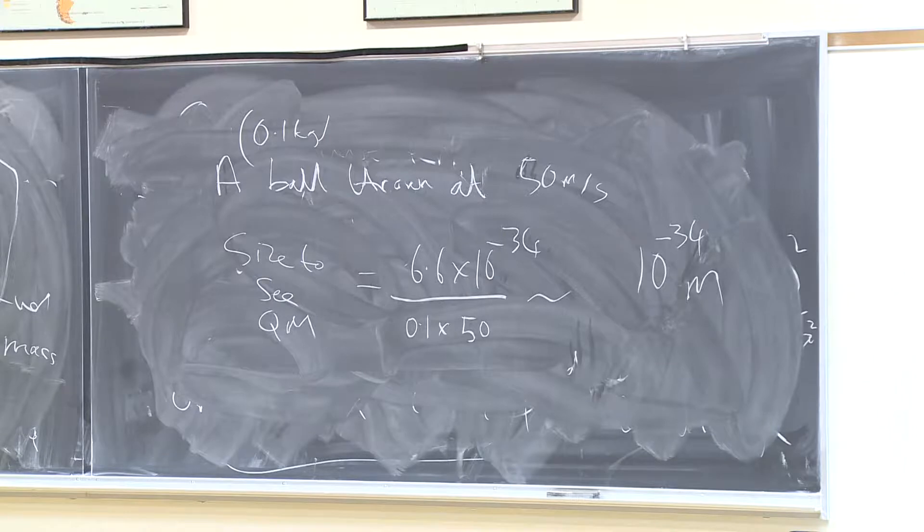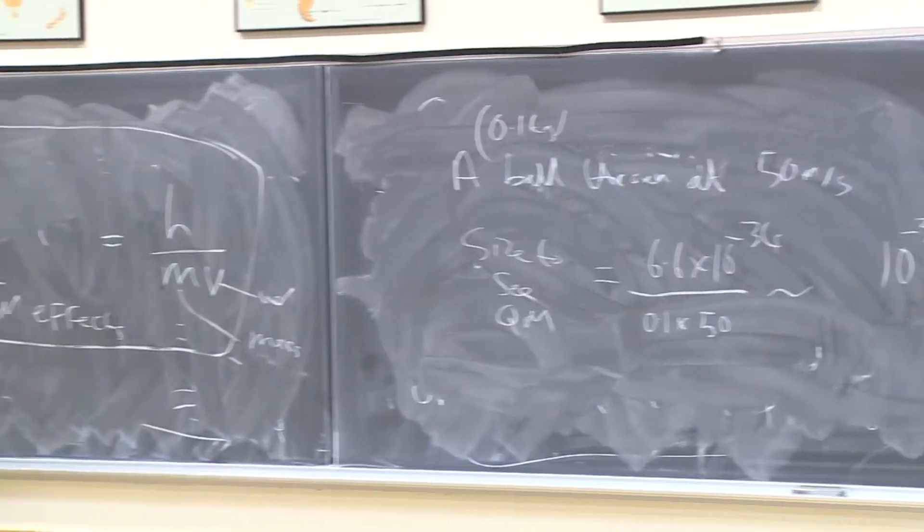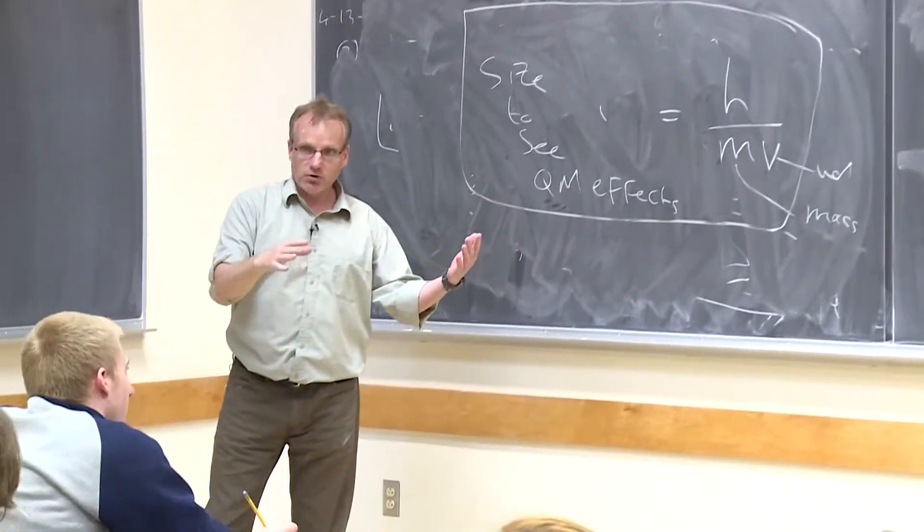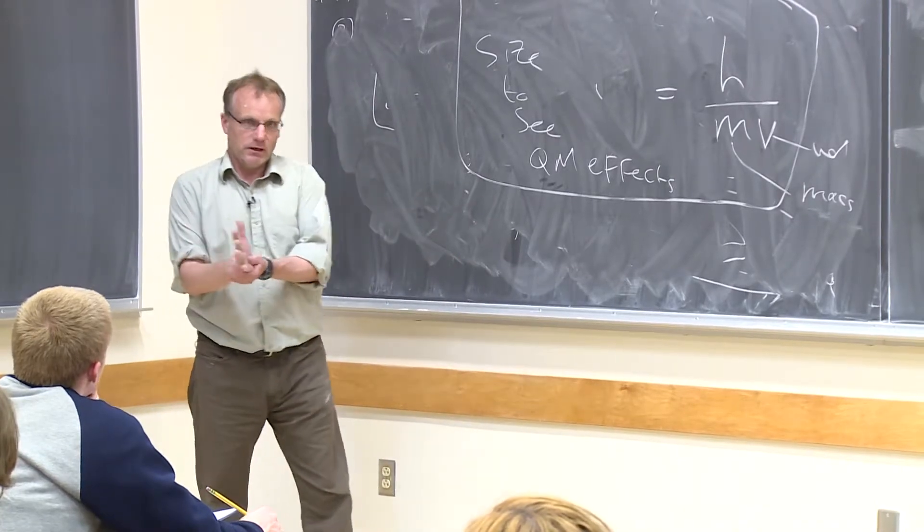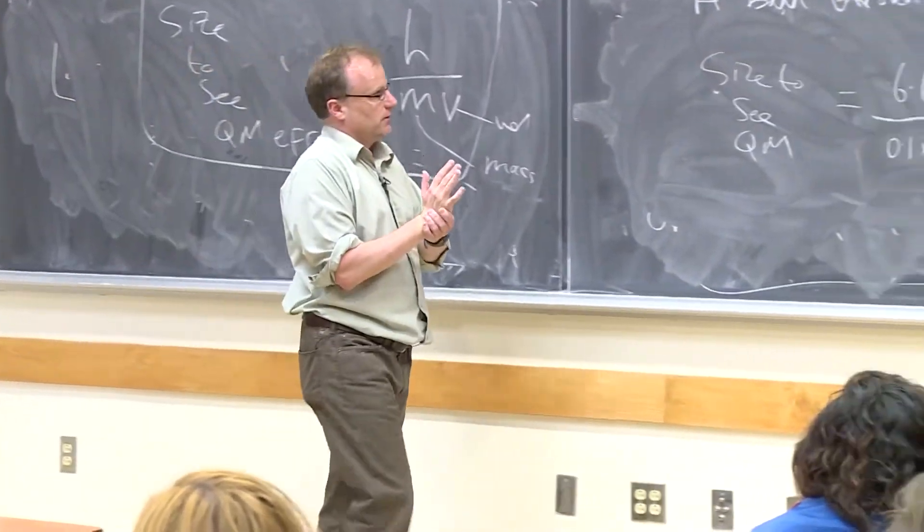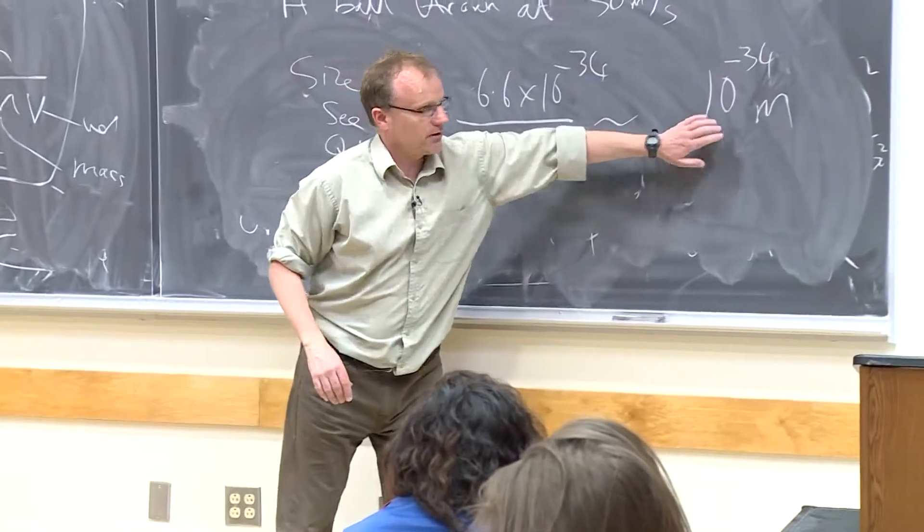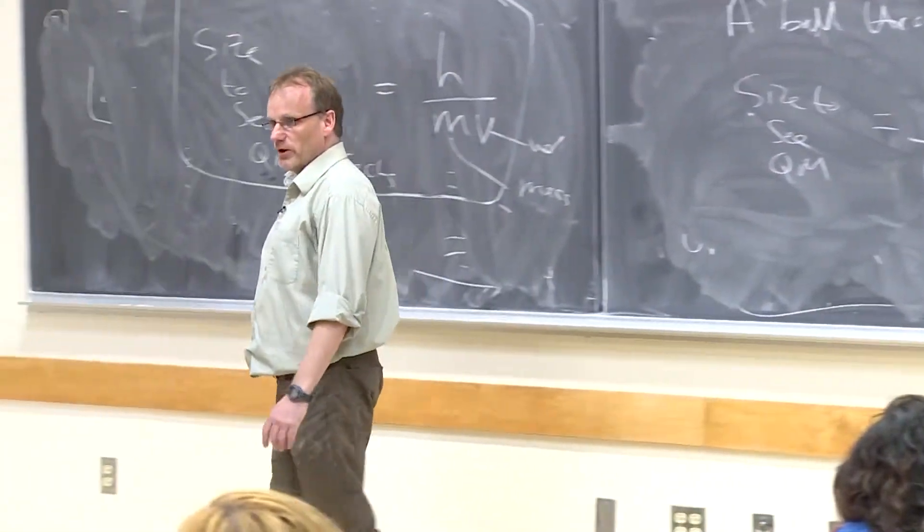So there is a finite probability of a person being on the other side of that door and then becoming a wave, slipping under the door and then reappearing on this side of the door. That's not impossible. It's just to see it, you'd have to be able to see things down to this scale. And we're not able to do that.